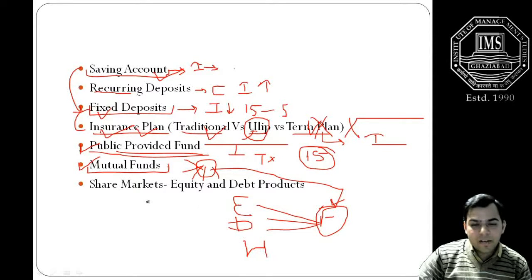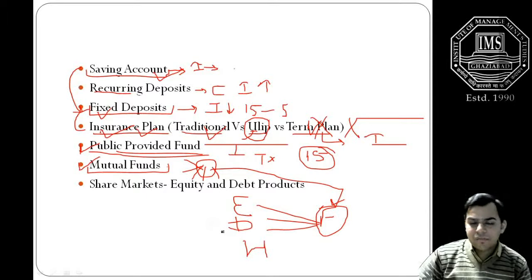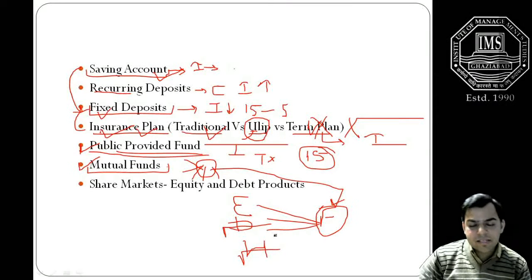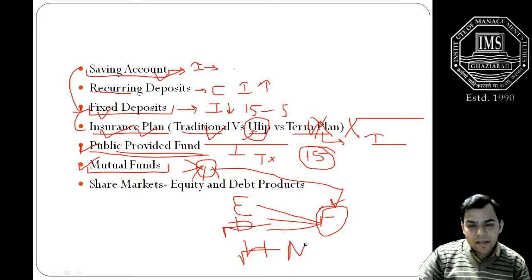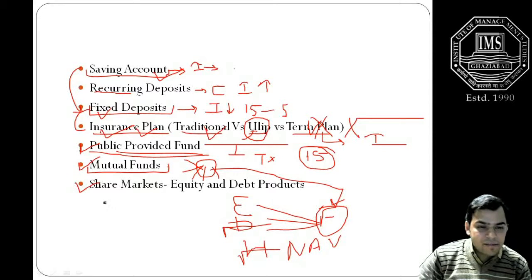Some schemes may be more directed towards equity, some schemes more directed towards debt, and some have the hybrid kind of nature. Our discussion today is about small and medium, so small and medium persons should go for debt kind of mutual funds or hybrid kind of mutual funds. And they can purchase any mutual funds depending upon the scheme at the NAV value - Net Asset Value.